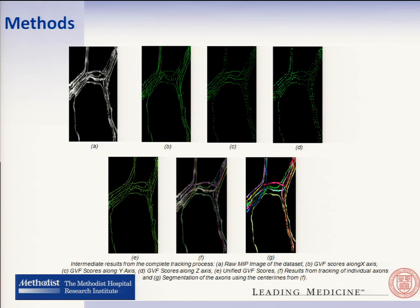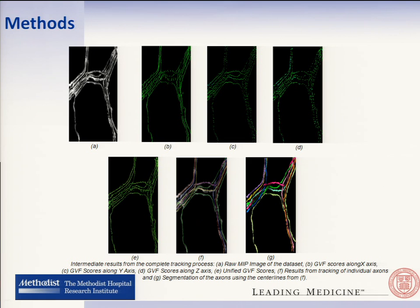To summarize the tracking process: we have the original data, followed by the X, Y, and Z scoring, and the unified scoring method. The result of interactive tracking is that each of the axons have been labeled and the centerlines have been drawn for each axon. Using these results and using the levels of this approach, we have segmented all of the axons, which is shown in the last figure.